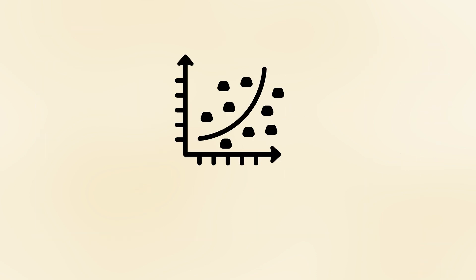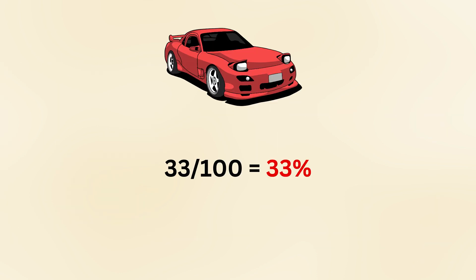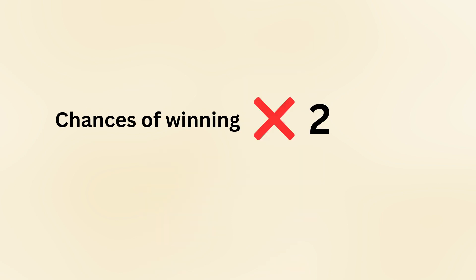Let's break it down further with an example. Suppose you play this game 100 times. Statistically, if you always stick with your original choice, you will win the car roughly 33 times out of 100. But if you always switch, you would win about 66 times out of 100. The difference is significant. In simple terms, switching doubles your chances of winning.